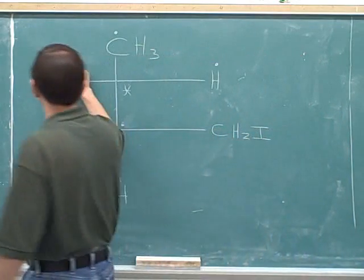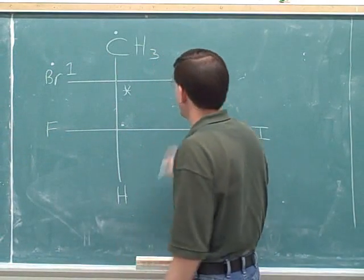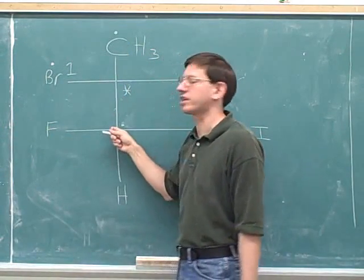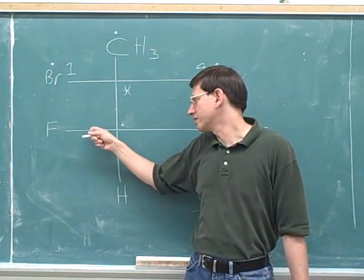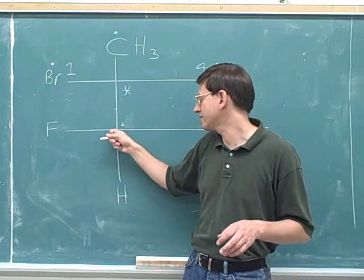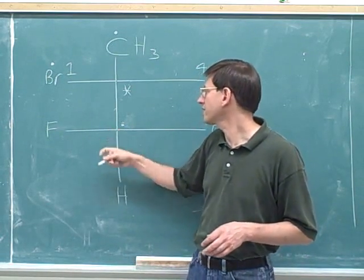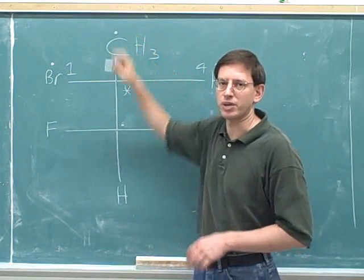This bromine gets the number one priority. The hydrogen gets the number four priority. And then the carbon on the top is tied with this carbon down here. Notice that anytime we have an intersection of horizontal and vertical lines, the convention in a Fisher projection is that this intersection represents a carbon. So this dotted carbon down here is tied with this dotted carbon up here.